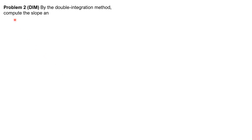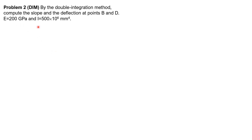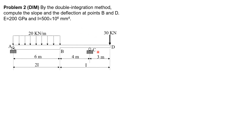For our second example, by the double integration method compute the slope and deflection at points B and D. The modulus of elasticity is 200 gigapascals and the moment of inertia is 500 times 10 to the 6 mm to the 4th. We have a composite beam: portion AB has moment of inertia 2I, while BCD has moment of inertia I. Therefore we have two equations of the elastic curve.